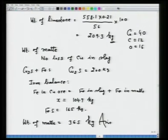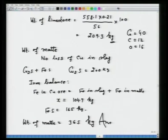Weight of matte equals Cu₂S plus FeS, giving 365 kg. The key tip for Problem 2 is to understand the chemistry of matte smelting very well in order to solve this problem correctly.